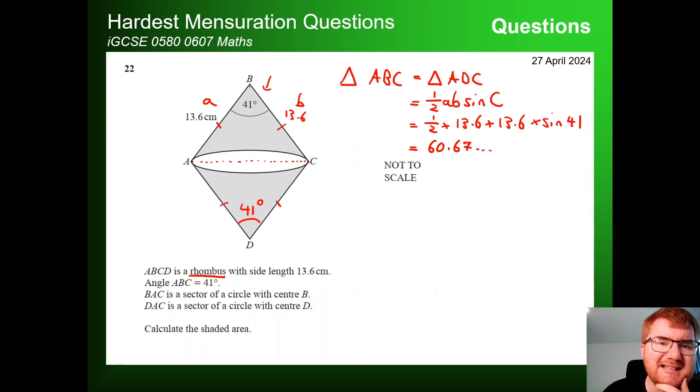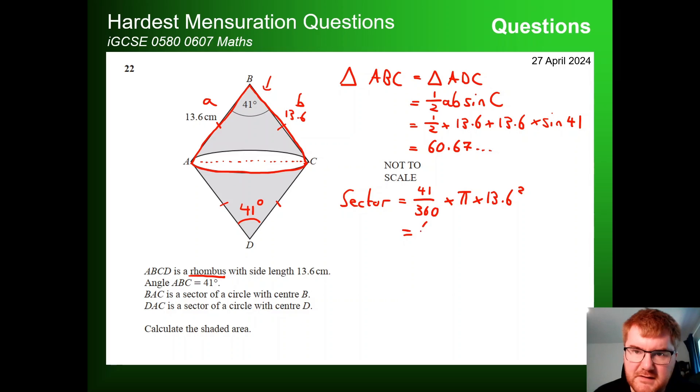We can also work out the sector here. So if I draw this in, we can actually work out the area of this. It's just the sector of the circle. So if I'm doing the sector, I'm going to use the word here, sector. This is going to be equal to the angle 41 over 360 times a full circle, or the area of a full circle, that's pi r squared. So pi times 13.6 squared. Now if I put that into my calculator, so 41 over 360, times pi times 13.6 squared, that's going to give us, again, some number. So 66.177.